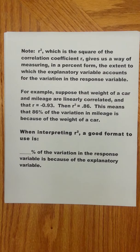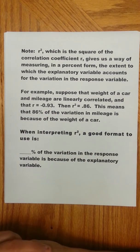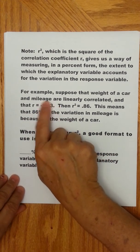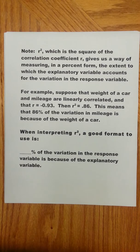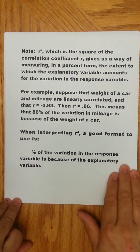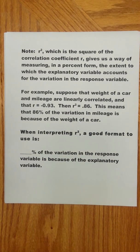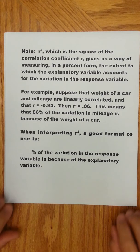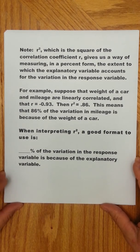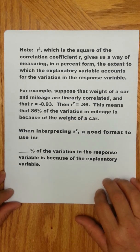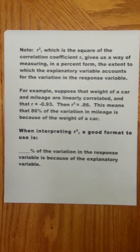And then there is another use of r. We could square r, and when we square it, it gives us a way of measuring in a percent form the extent to which the explanatory variable accounts for the variation in the response variable. So for example, if you had the weight of a car and the mileage, and you knew those were linearly correlated, and that you had a very strong correlation, it's negative, then r squared, you actually take this number and square it, would be 0.86. And what that means is that 86% of the variation in the mileage is because of the weight of the car. So here's again a format you could use for r squared: blank percent of the variation in the response variable is because of the explanatory variable.